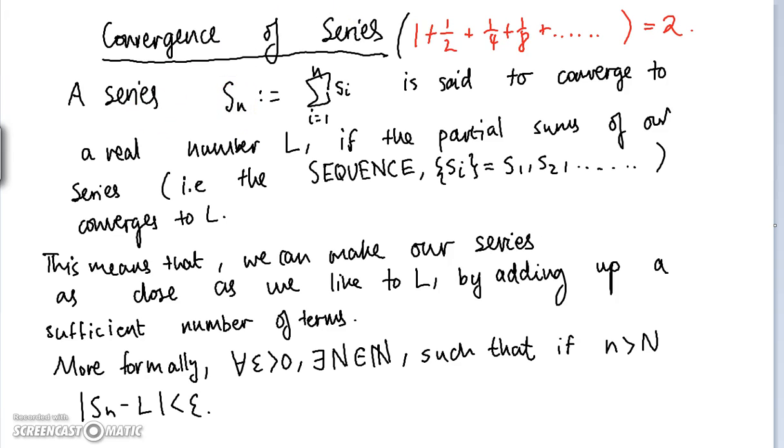We're going to formally define what a series converging actually means. A series can also be written as a sequence. What we do is take the first term of our series, so one, which is an approximation in itself of the sum of the entire series. Obviously it's not a very good approximation because it's definitely less than what this entire series equals. If we take two terms and add them both together, we get 1.5.